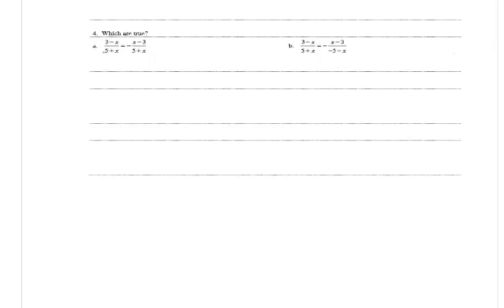In number 4, it asks which equations are true. In A, we have 3 minus x divided by 5 plus x, equal to negative x minus 3 divided by 5 plus x. The denominators are the same, so if we multiply the numerator on the right by the negative, we get 3 minus x divided by 5 plus x, which matches the left side. So A is true.